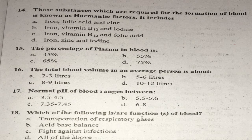Question number seventeen: The normal pH of blood ranges between what values? The normal pH of blood is 7.35 to 7.45. Right answer is C.